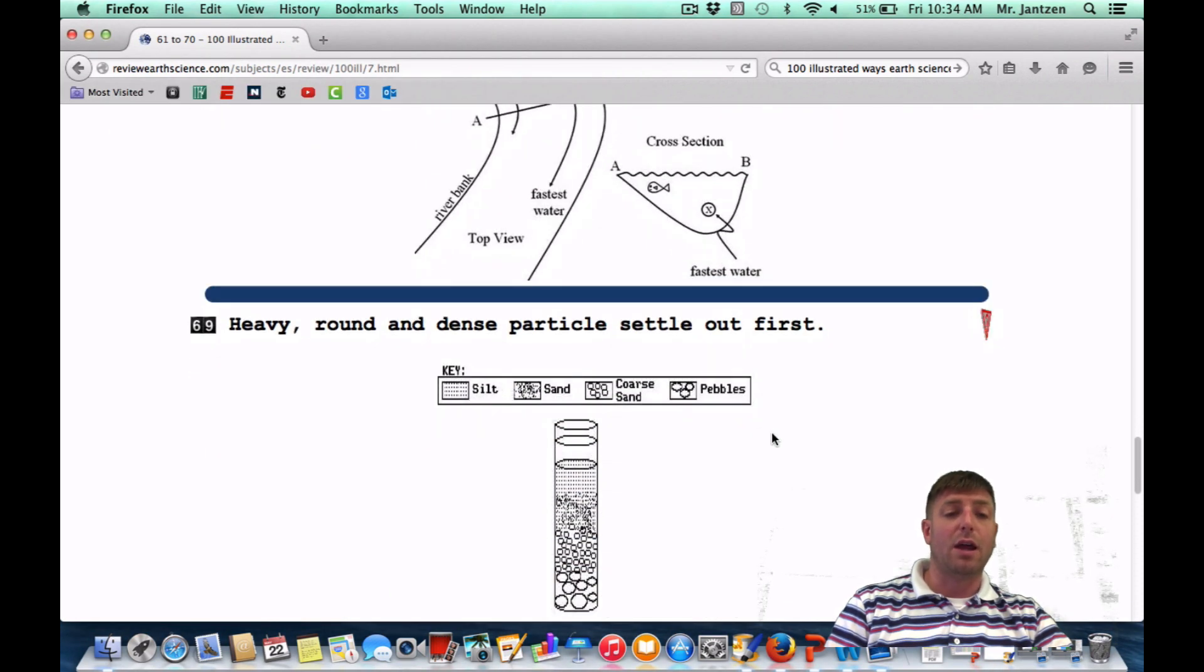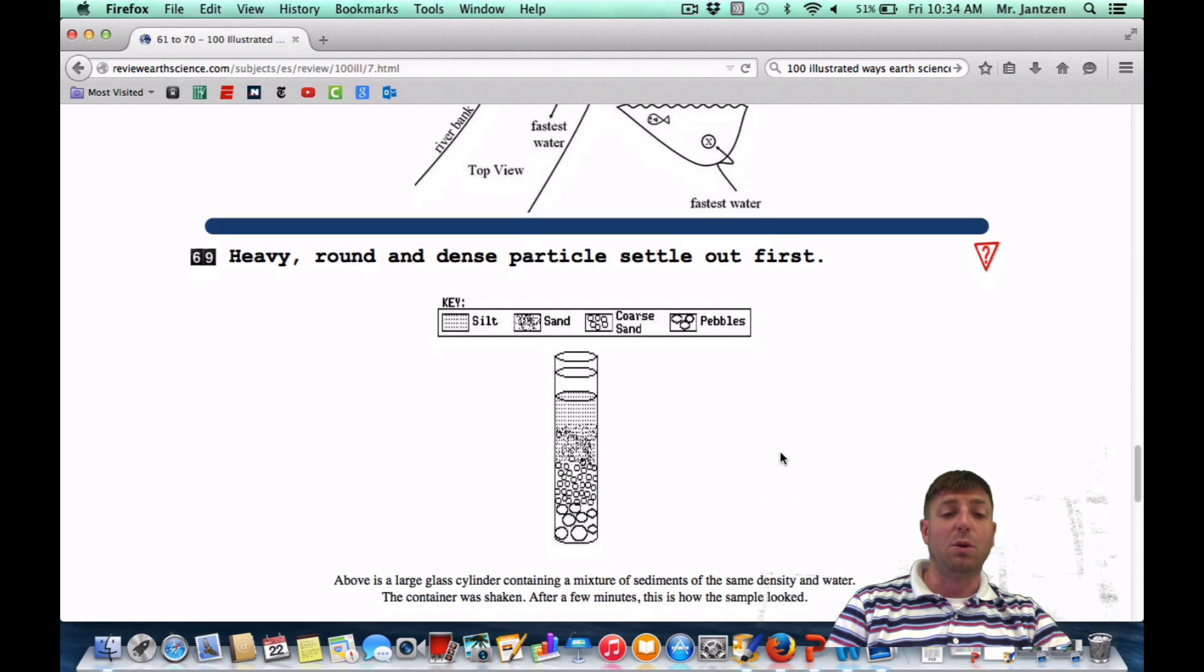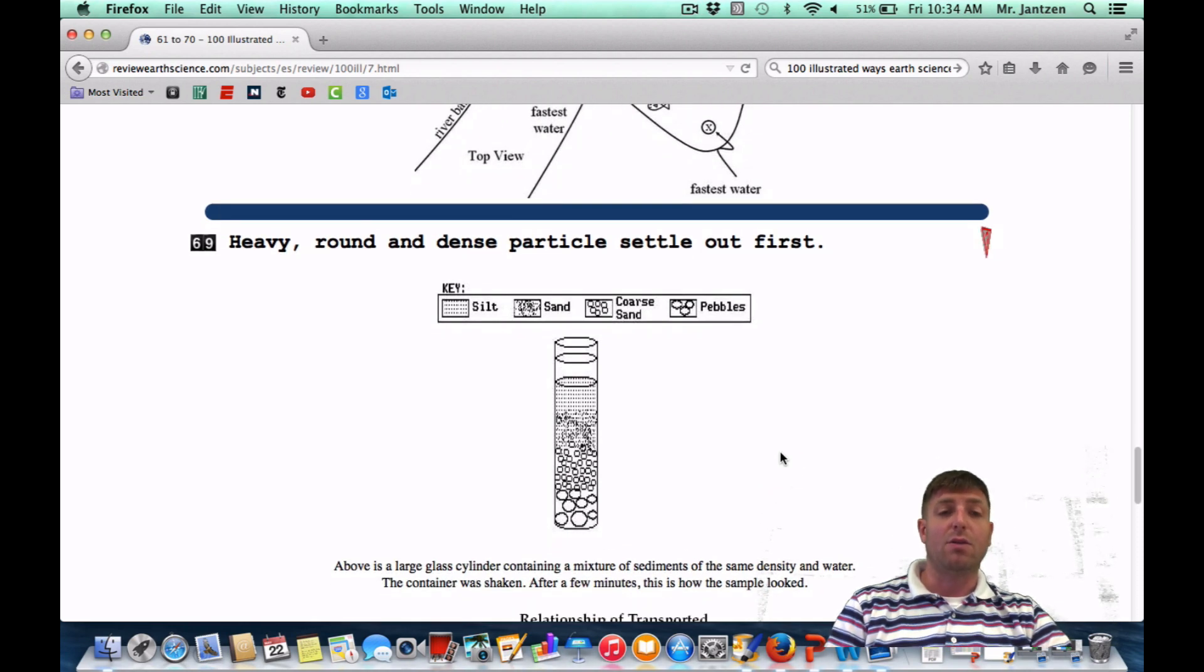Number 69: Heavy, round, and dense particles settle out first. In still water, if you drop it in, the heaviest, the roundest, and the densest are going to get to the bottom first. So if you drop in a whole mess of mixed sediment, you're basically going to have this kind of vertical sorting going on where you have the biggest at the bottom and the smallest at the top.